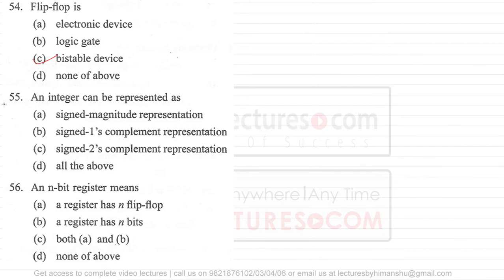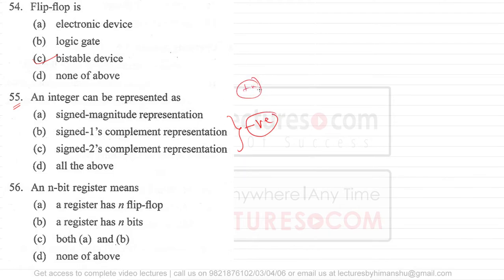Question 55: An integer can be represented as one's complement, two's complement, or sign magnitude representation, depending on the implementation. One's complement, two's complement, and sign magnitude are all used to represent negative numbers. We can have positive or negative numbers and use these representations accordingly. Option D is the correct answer.